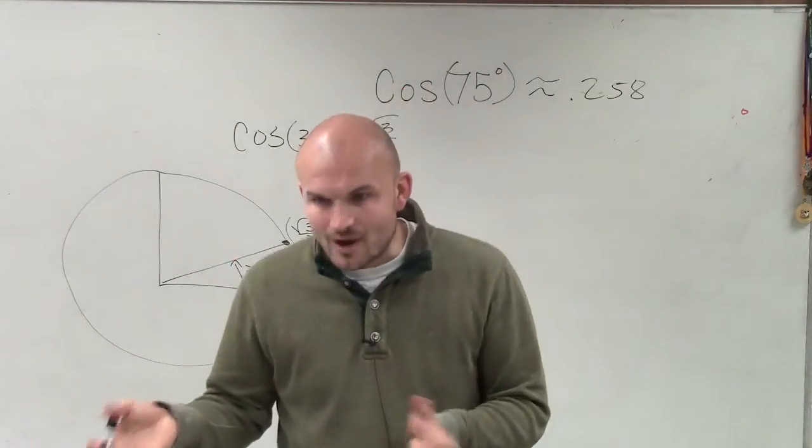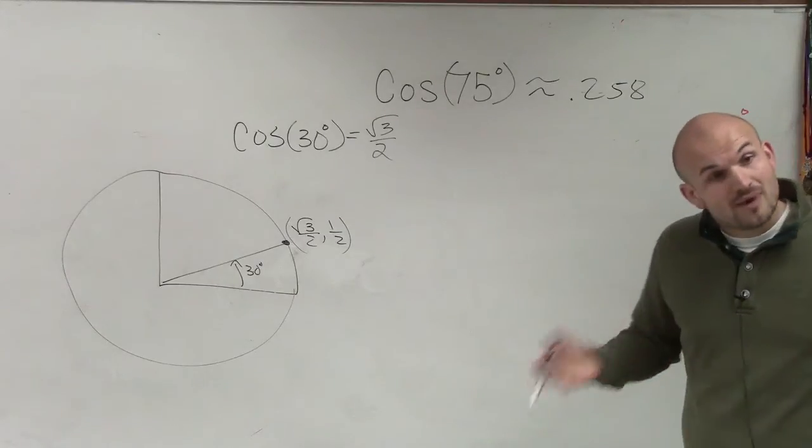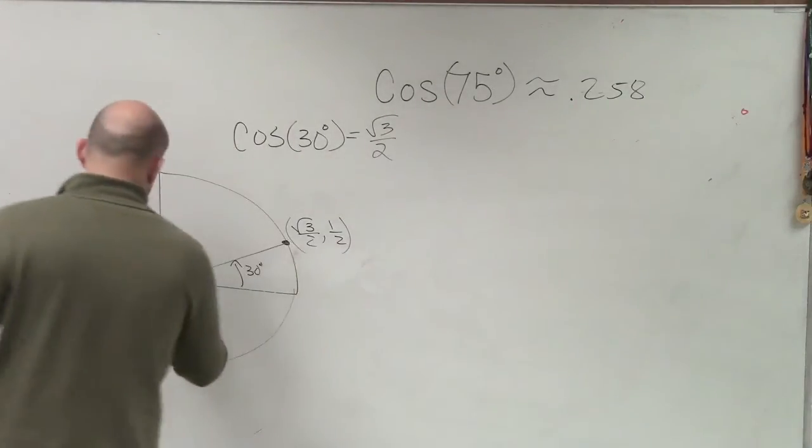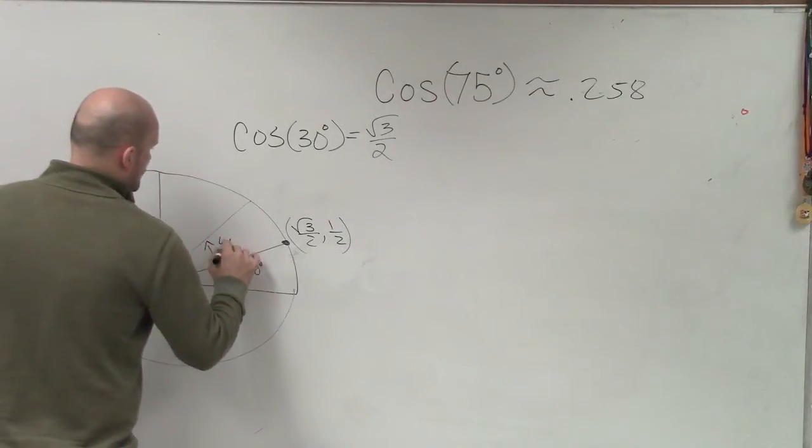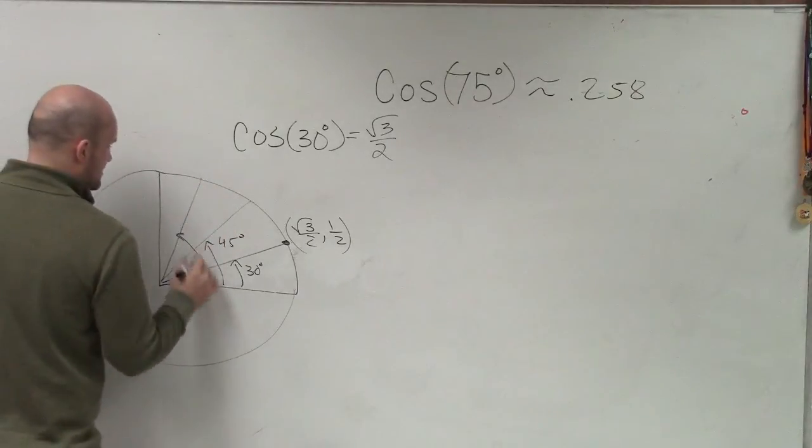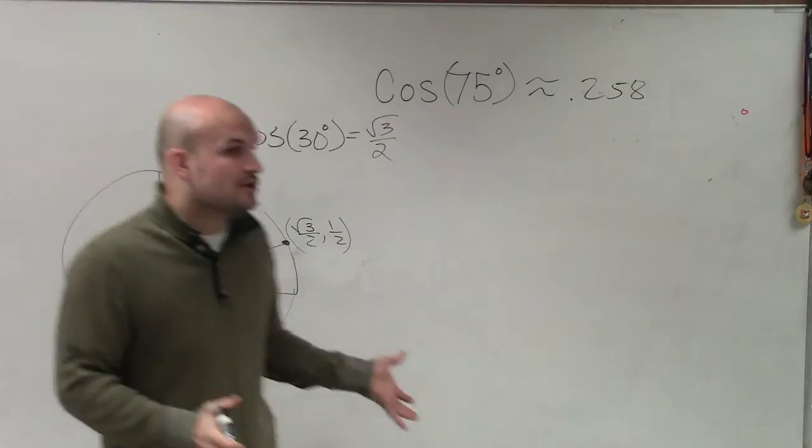So Justin, why can't we do 75 degrees? We don't have the point on the unit circle. That's right. We don't know the exact point on the unit circle. So far, we have only talked about 30 degrees, 45 degrees, and 60 degrees. That's all we talked about as far as points on the unit circle.